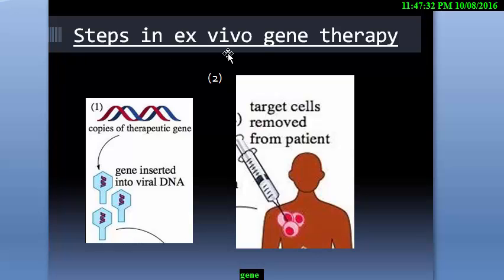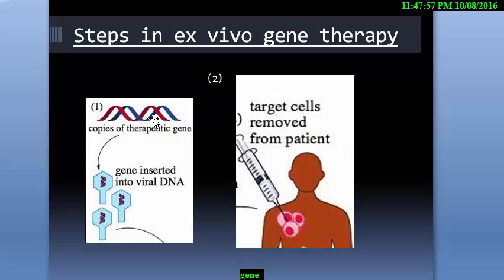Here are the steps in Ex Vivo Gene Therapy. The first step is the therapeutic gene — that is a perfect gene, meaning this gene is working well. We will use this therapeutic gene for our disease gene. For the gene, we will insert it into a viral DNA as a vector. Viruses are used as vectors.